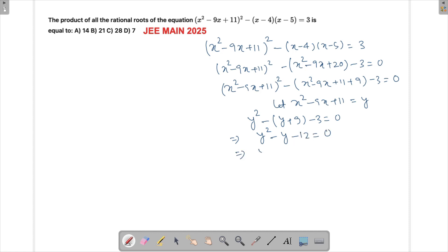Now I can factorize this: this will become y² - 4y + 3y - 12 = 0. So we want a -5, so -4 + 3. We can take y common, so this will become y - 4, and if I take 3 common this will be y - 4 equals to 0.